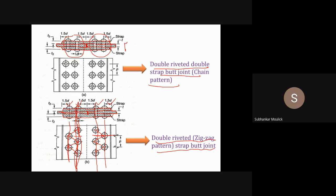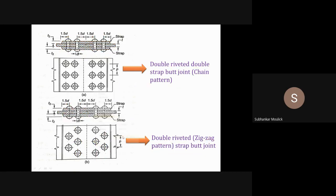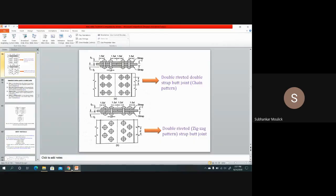This is the front view and this is the top view of the two plates joined by the two rivets. In the next class, we will discuss the terminology, then the stresses acting on the rivet, and then we will solve problems. Thank you — if you have any doubts you can ask, otherwise you can leave the meeting.